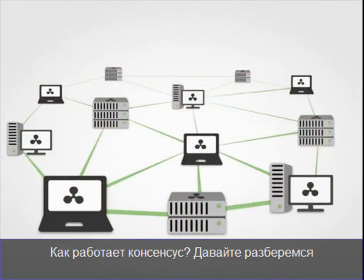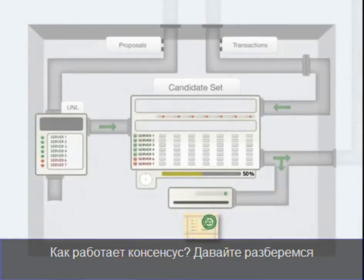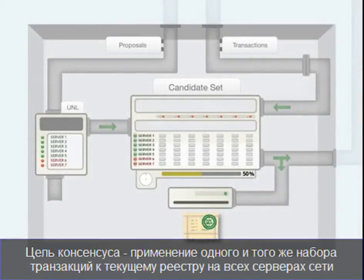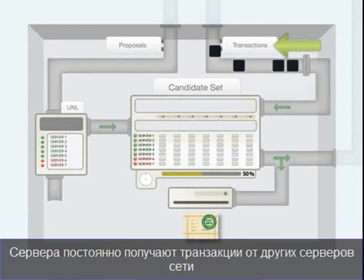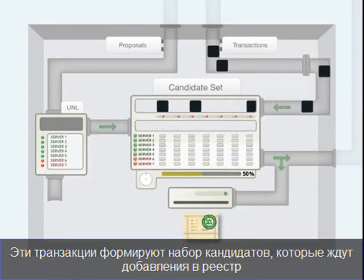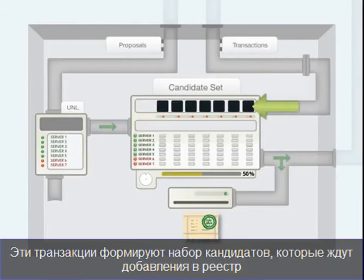How does consensus work? Let's break it down. The goal of consensus is for each server to apply the same set of transactions to the current ledger. Servers continually receive transactions from other servers on the network. These transactions form a candidate set — a pool of transactions waiting to be added to the ledger.